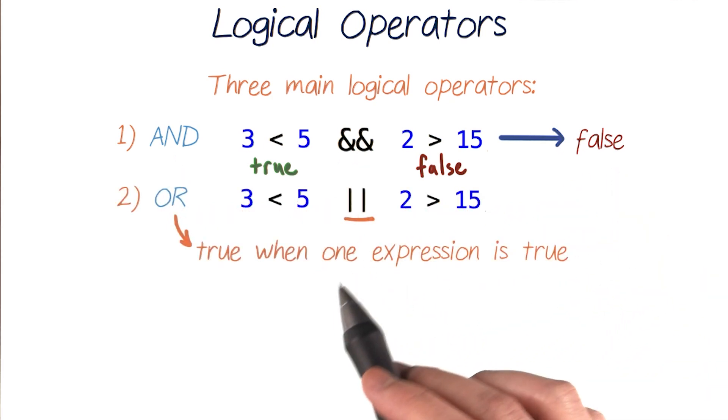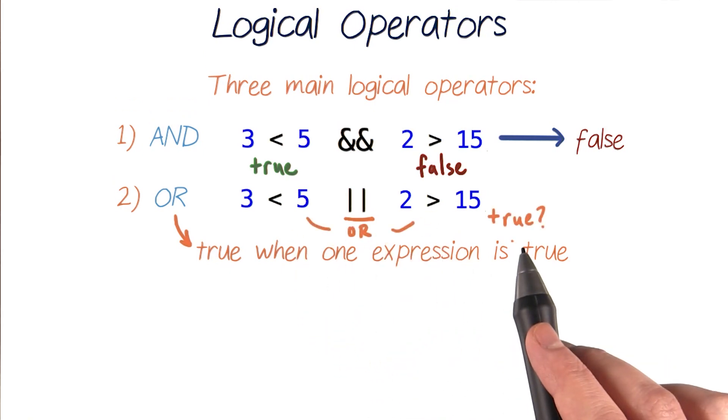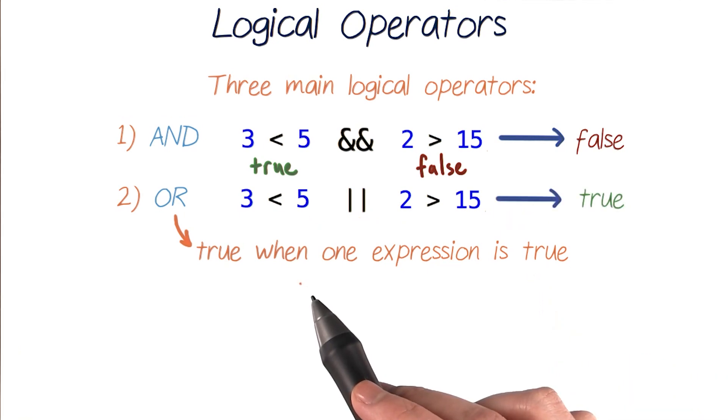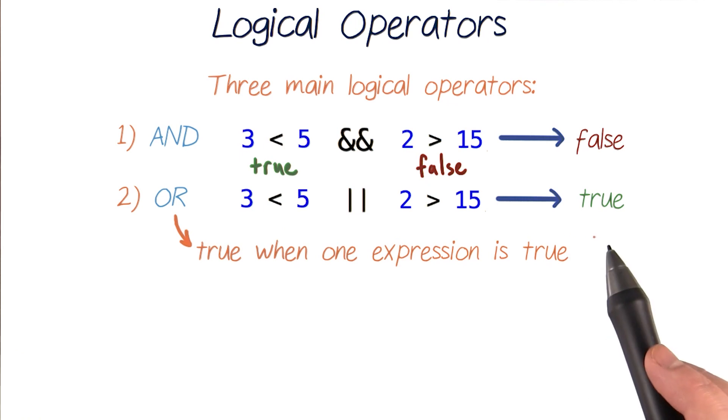An OR operator also combines two tests, but will evaluate to true when one or both of its two expressions are true. So it checks if its left expression or if its right expression is true, and if at least one of them is, then the OR combination will also be true. So for the same combination of expressions, this one true and this one false combined with an OR, this whole expression will evaluate to true.